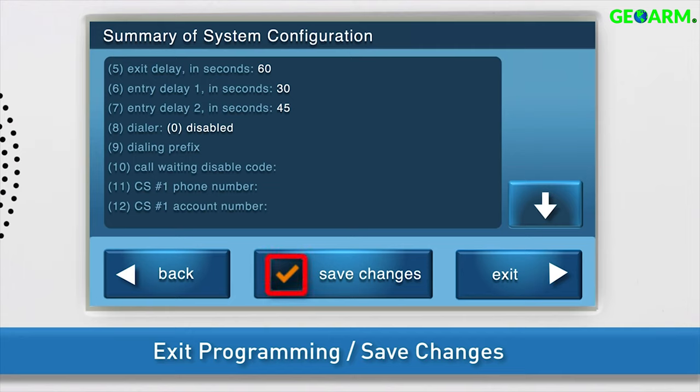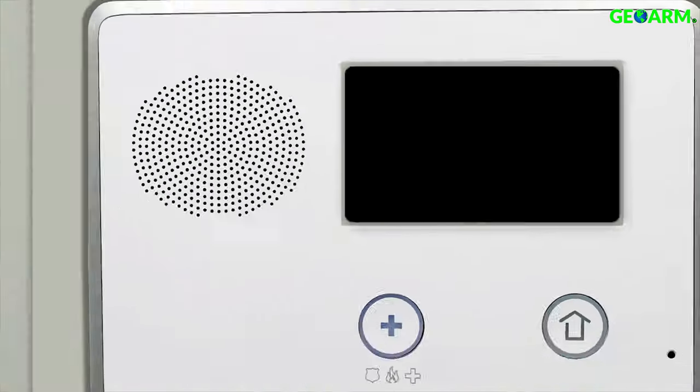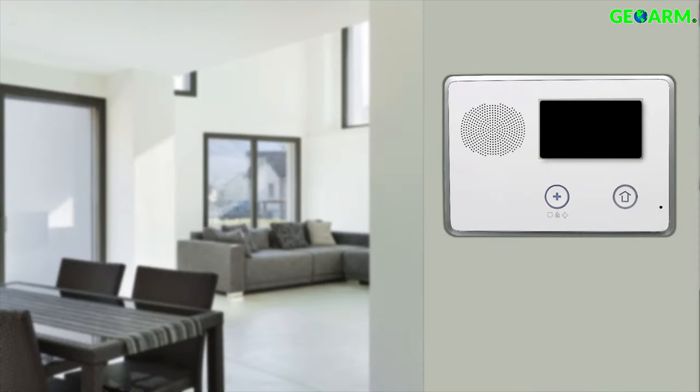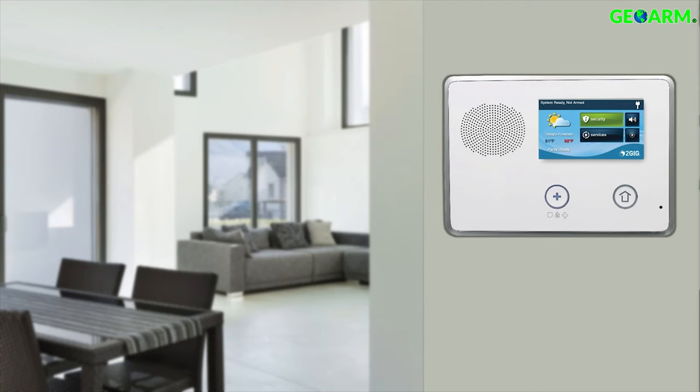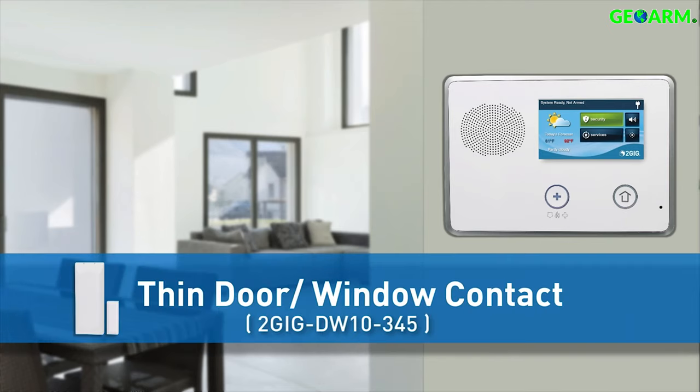The option to save changes is selected by default. Finally, press Exit. The system will automatically save the new information, and the panel will reboot. The thin door window contact has now been programmed into the 2GIG GC2 panel.